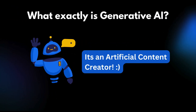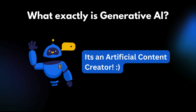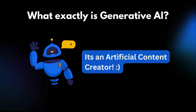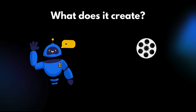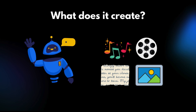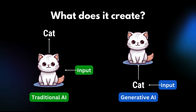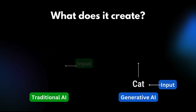So what exactly is Generative AI? Simply put, it's a type of artificial intelligence that can create new content. This includes text, images, music and even video. Unlike traditional AI which analyzes data to make decisions or predictions, Generative AI produces new data that's often indistinguishable from content created by humans.